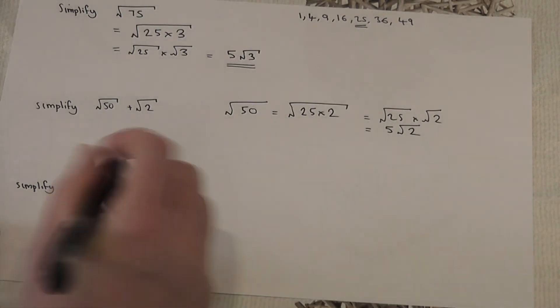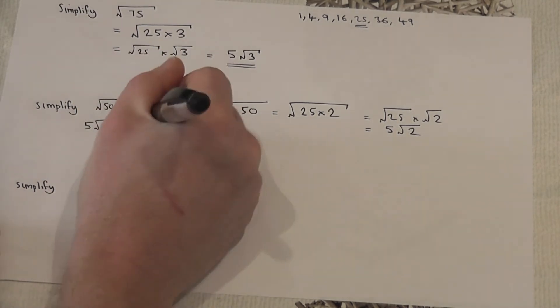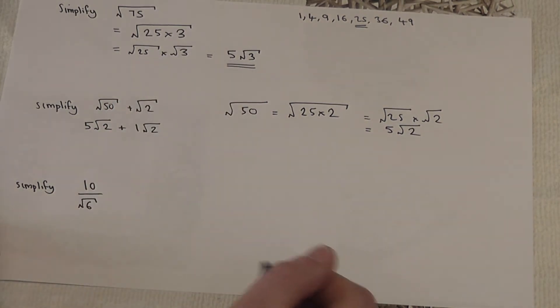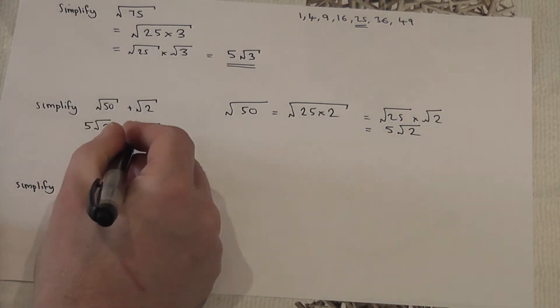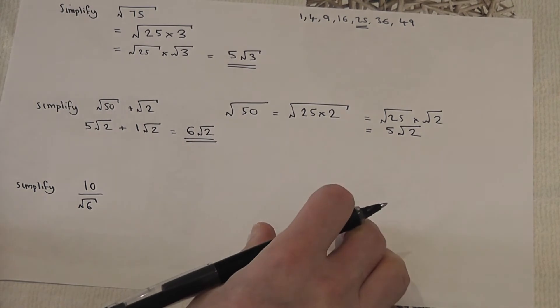So back to the original question, root 50 is five root two. This is basically one lot of root two. So five lots of root two plus one lot of root two just equals six lots of root two.